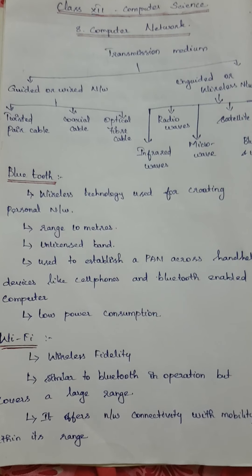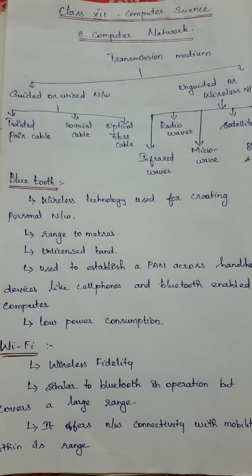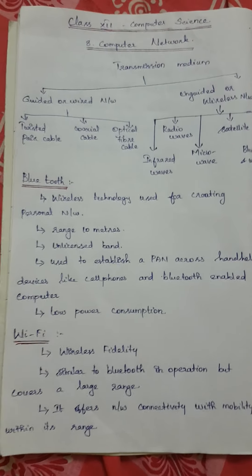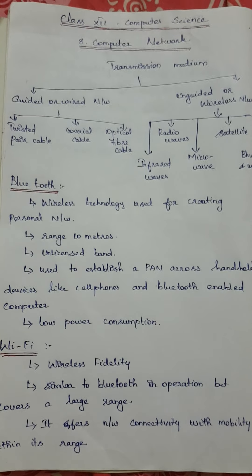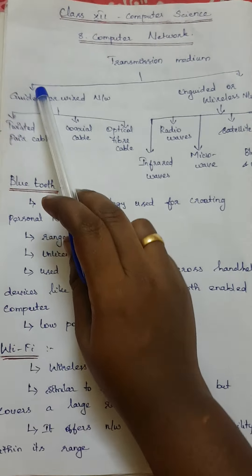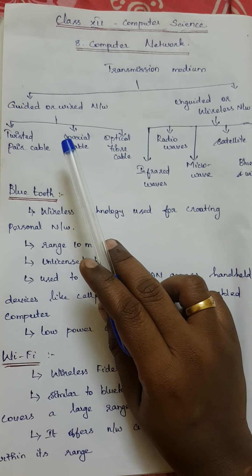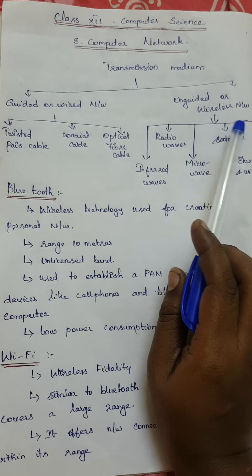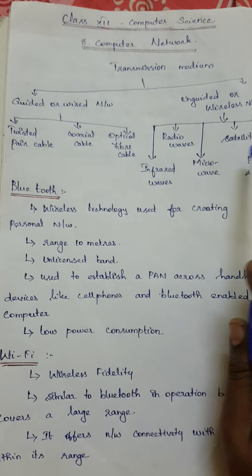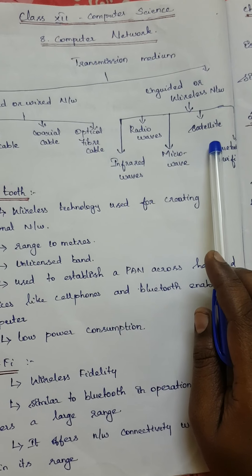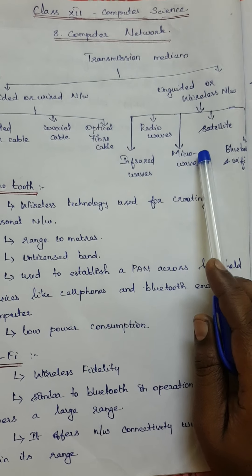Hello everybody. In this video we are going to see a topic on computer networks. In the previous session we saw transmission medium and its types — guided (wired) and unguided (wireless). In guided networks we saw three types, and in unguided networks there are five types. We have already covered three types, and in this video we are going to cover satellite, Bluetooth, and Wi-Fi.